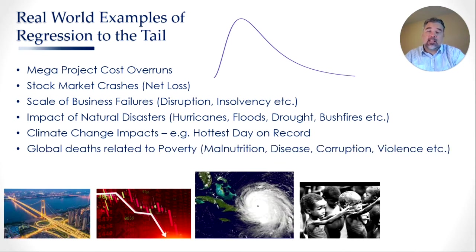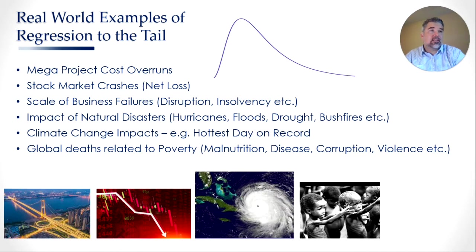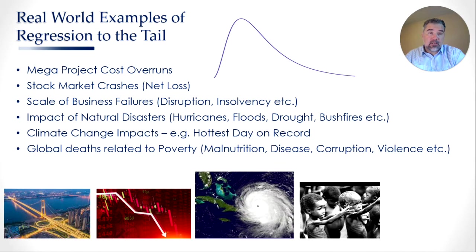Global deaths related to poverty are another concerning example — people dying from things like malnutrition, disease, corruption, violence, and civil war. It's estimated by the IMF that there are roughly 50,000 people dying every single day from poverty-related circumstances worldwide. What the law of regression to the tail suggests is that soon more people will die every three months from poverty-related causes than from a full year of coronavirus.